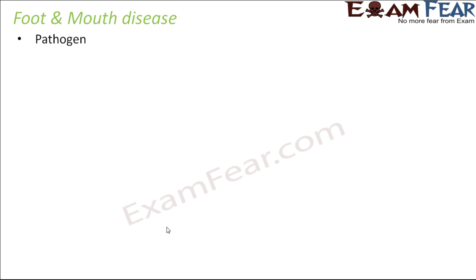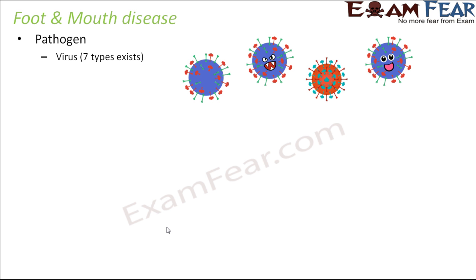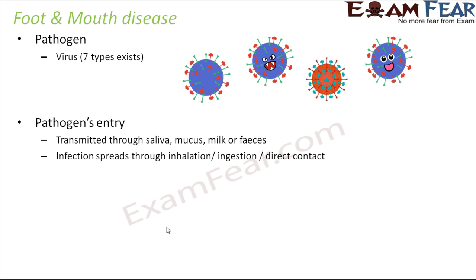Foot and mouth disease — the pathogen involved here is a virus. There is not just one particular virus; there are seven strains of the same virus which can cause this disease. If we want vaccination against it, we would actually need to provide vaccination for all seven types. The virus can enter the body through saliva, mucus, milk, or feces.